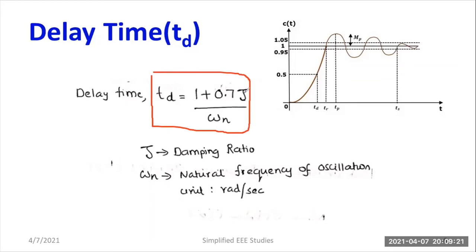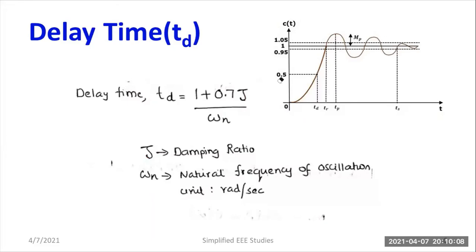Zeta is nothing but the damping ratio. The damping ratio decides the system type: if zeta is greater than one, it is an over-damped system; if zeta equals one, it is a critically damped system; if zeta is less than one, it is an under-damped system. Omega_n is the natural frequency of oscillation, denoted by the letter Omega_n, with units of radians per second. You can evaluate the delay time using the formula for Td. Note the position of Td on the response curve.